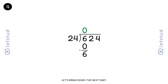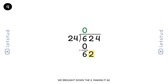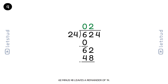Let's bring down the next digit. Now we have 62. How many times does 24 fit into 62? It fits 2 times. We brought down the 2, making it 62. 24 fits into 62 2 times. 2 times 24 is 48. 62 minus 48 leaves a remainder of 14.